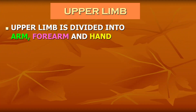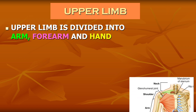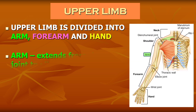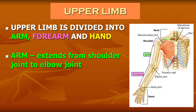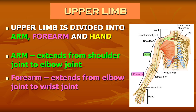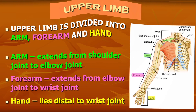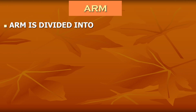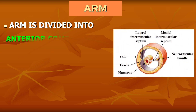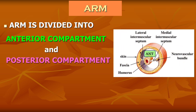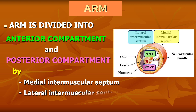The upper limb is divided into arm, forearm, and hand. The arm extends from the shoulder joint to the elbow joint, the forearm extends from the elbow joint to the wrist joint, and the hand lies distal to the wrist joint. The arm is divided into anterior compartment and posterior compartment by the medial intermuscular septum, lateral intermuscular septum, and humerus.